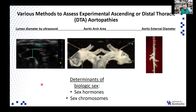For today's presentation, I'll show a few different ways of quantifying these pathologies. We use ultrasound to measure the ascending aortic lumen diameter as an index of dilation. At study endpoint, we take out the aorta, clean it, open it up, and measure the area of the aortic arch as an index of aortopathy. We also measure the external diameter in the distal thoracic aorta. I'll be studying mice, and focusing on the biologic sex determinants of sex hormones — specifically male androgen — as well as sex chromosome genotype, meaning XX in females and XY in males.